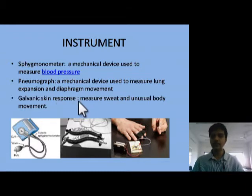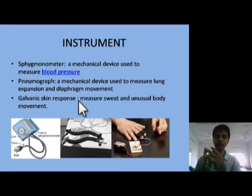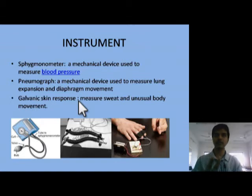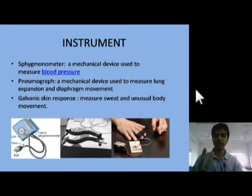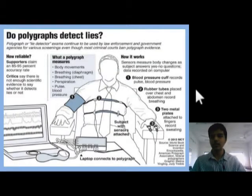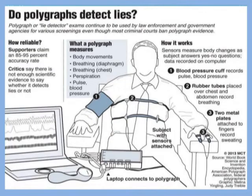The galvanic skin response device contains two copper plates attached to the fingertips of the person. As we sweat or as the somatic nervous system creates any impulses, we start to sweat. Copper conducts electricity and this is presented in a graphical formation.